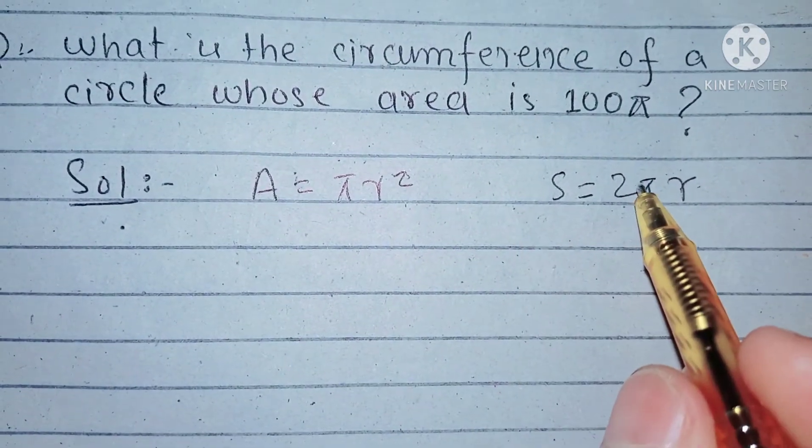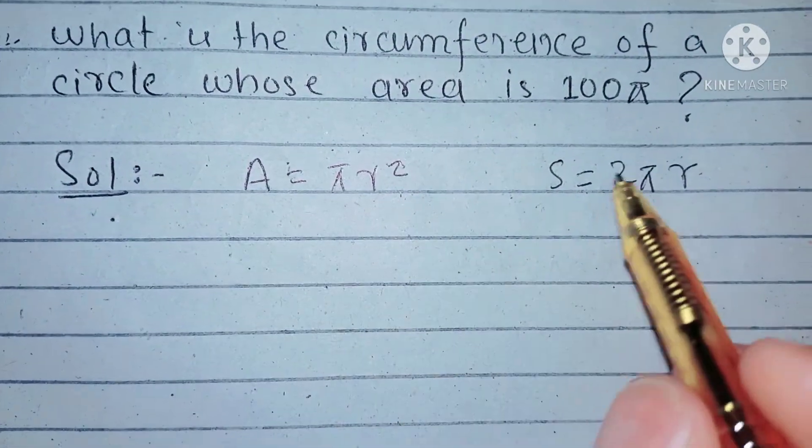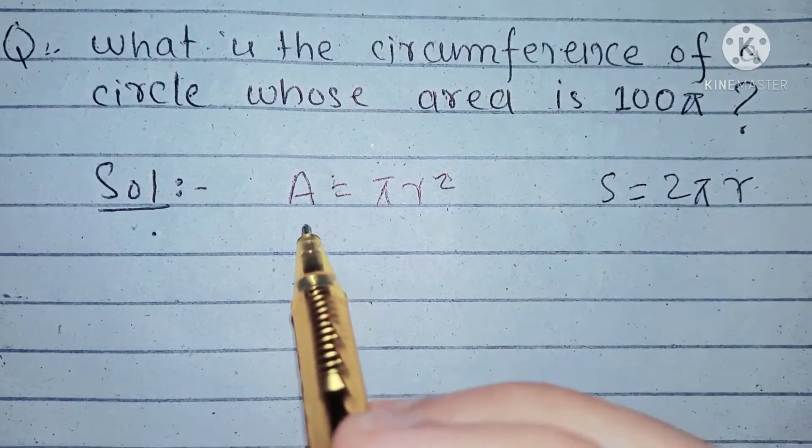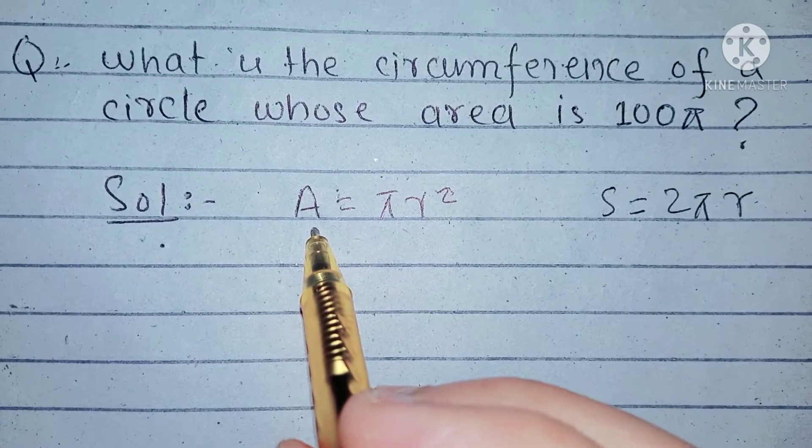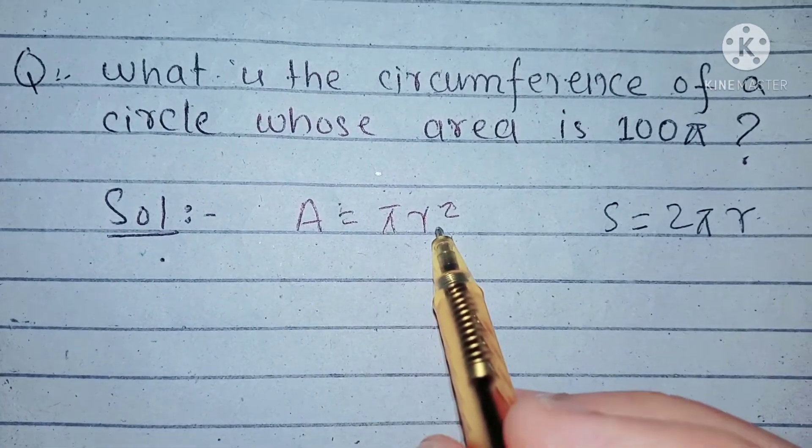It means that if you find the value of r, we can find out the circumference. So if area of a circle equals πr²,